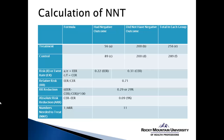The last value — and the one we're most interested in — is the numbers needed to treat. We take the ARR as a decimal (not a percentage) and divide it into 1. So 1 divided by 0.09 gives us an NNT of 11. We interpret this as: we would need to expose 11 people to the treatment to prevent one negative outcome — in this case, a stroke. That's fairly close to 1 and represents a pretty efficient treatment.